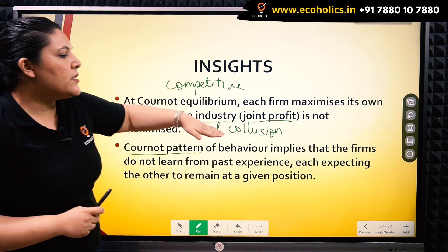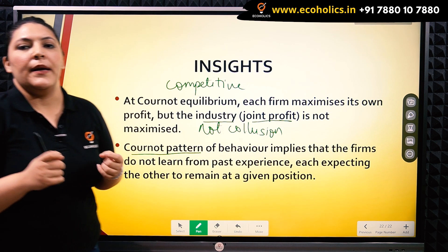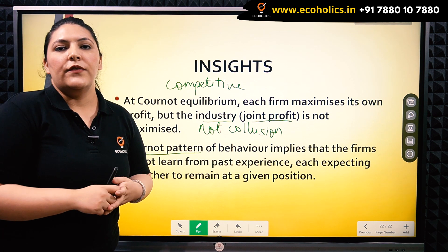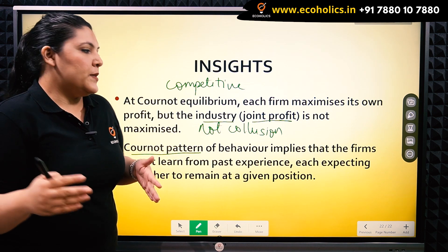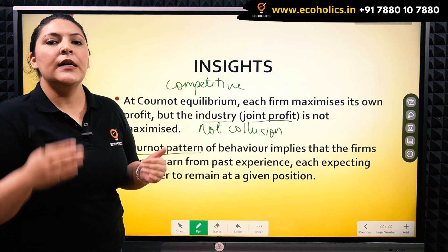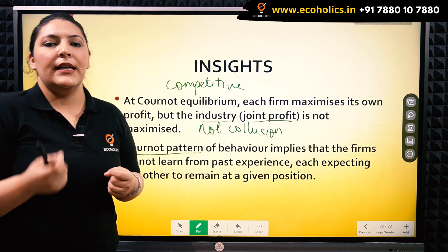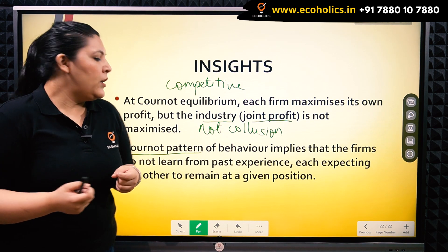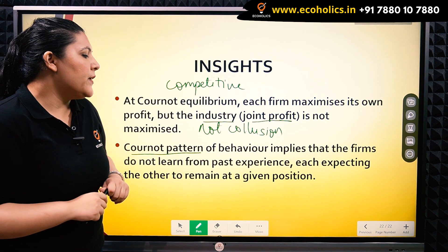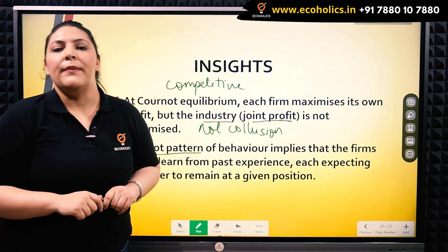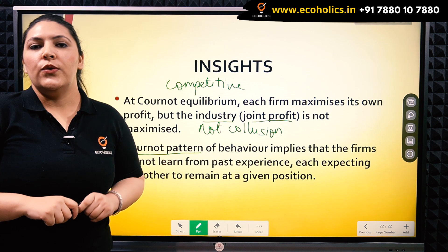We also have to remember that the Cournot assumption essentially says that firms do not learn from their past behavior. The firms have understood that even when going ahead with a competitive equilibrium and keeping the behavior of the other firm as constant, this behavior leads to lower profits. Still, continuing with this behavior leads to continued lower profits — and this is what we call naivety in the Cournot model. The Cournot assumption implies that firms do not learn from past behavior and each expects the other firm to remain at its own previous level. This ends the discussion on Cournot equilibrium.